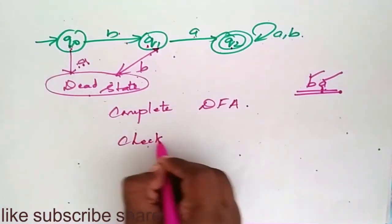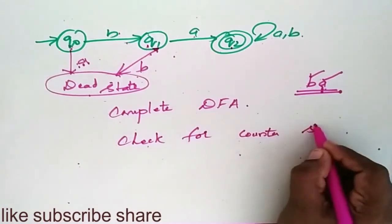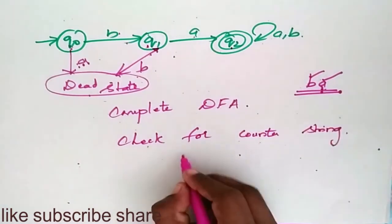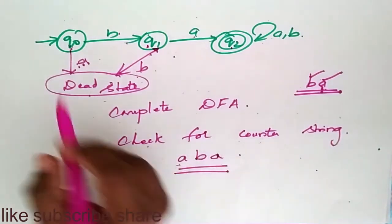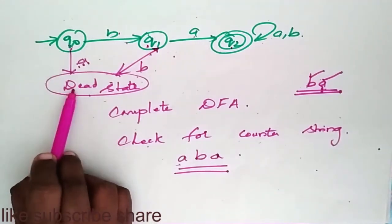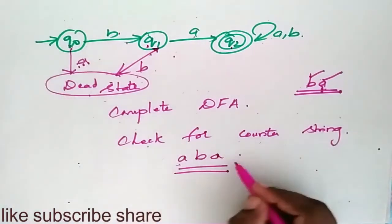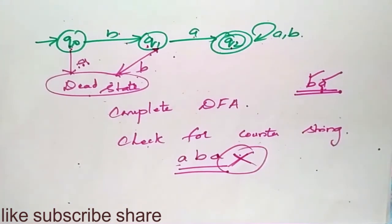Check for counter string. Suppose I have a string A, B, A. Now, when I go for considering an input A, it automatically comes to the dead state. This dead state is not the final state. So this string is not accepted.